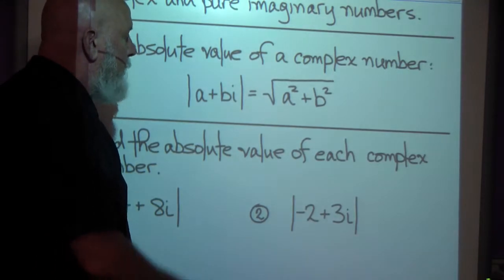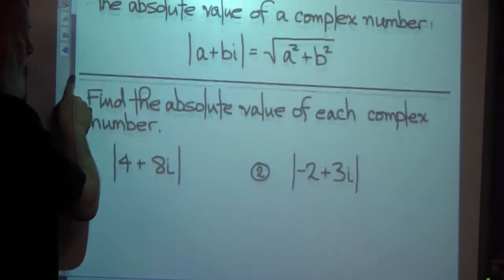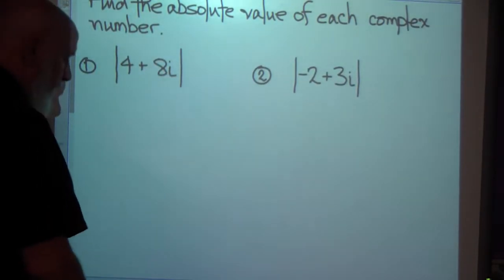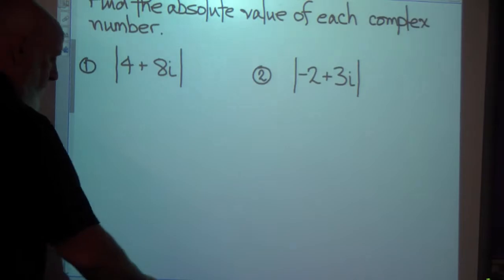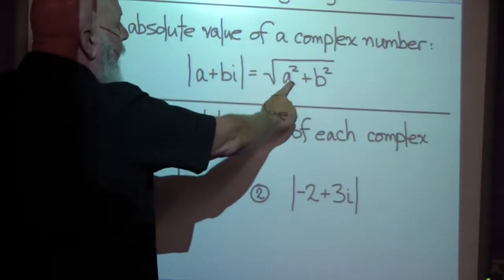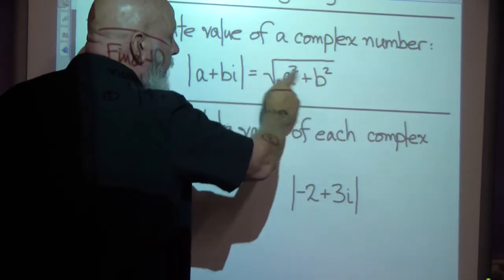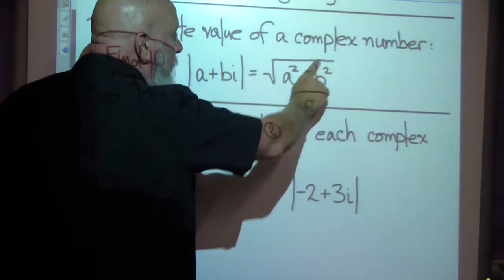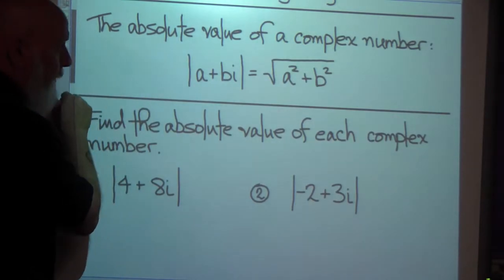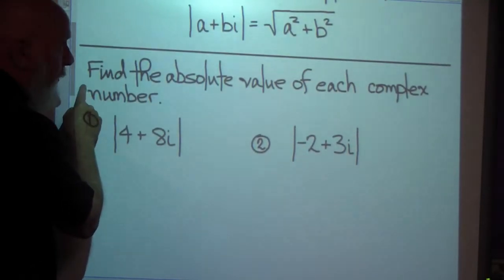Let's put this into practice. Find the absolute value of each complex number. The formula is: take a squared plus b squared, and take the square root of that. It sounds like the Pythagorean theorem — and in fact, it is a derivative of the Pythagorean theorem, as we'll learn later.